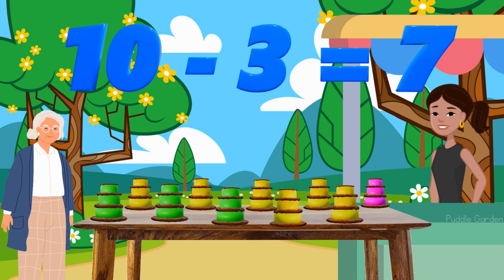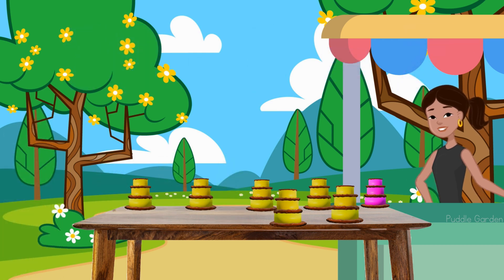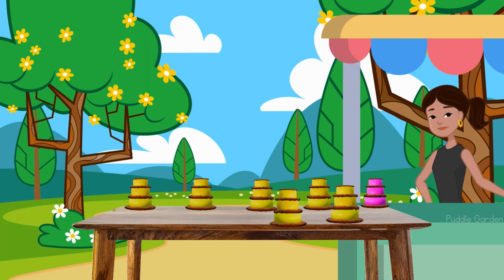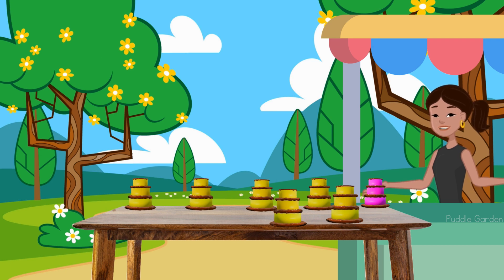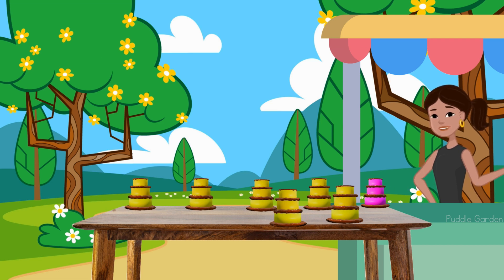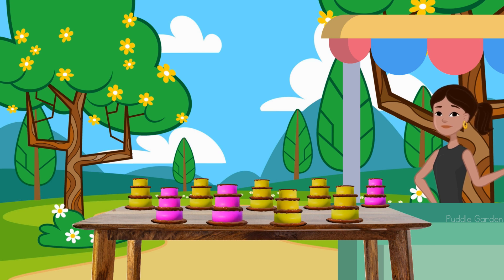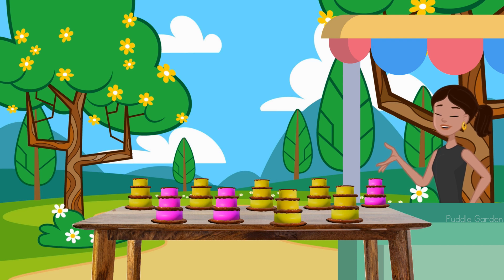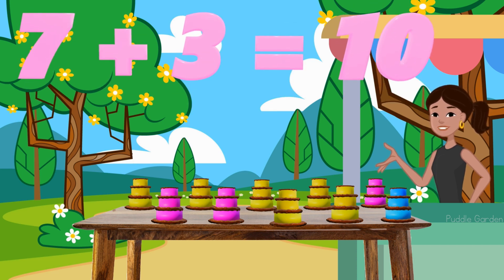Three cakes are gone but we need 10. So if we have seven, how many more do we need to bake to get to 10? We can start from seven: eight, nine, and 10. So that would be three more cakes that we need to bake. Great work.